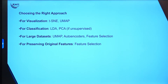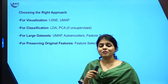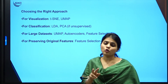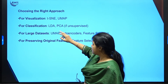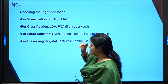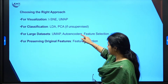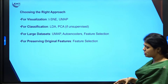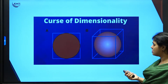Knowing when to choose each technique is important. For visualization of non-linear data, we go for TSNE and UMAP. For classification, we go for LDA, and PCA for unsupervised tasks. For large datasets in deep learning, we go for autoencoders, UMAP, or feature selection. When we want to preserve original features without any transformation, we use feature selection methods.